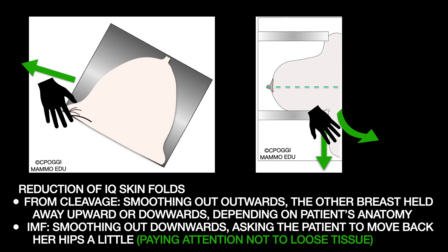Regarding corrections, they are strongly dependent on the patient's anatomy. We ask the patient to hold her breast out of the way — outwards, upwards or downwards — choosing the best solution to eliminate the faults. Regarding the IMF, we have to smooth out the tissue vertically downwards. We could ask the patient to move her hips backwards — it is very effective, but you risk losing deep inferior tissue, so pay close attention to that.